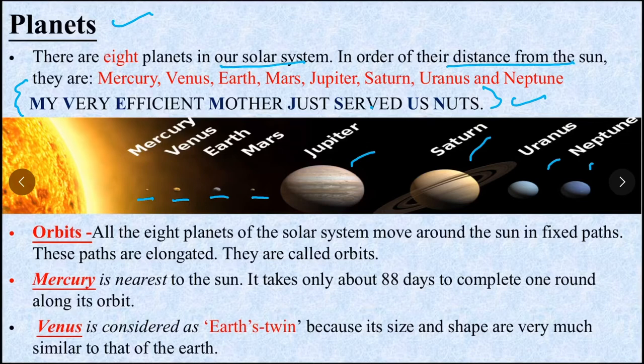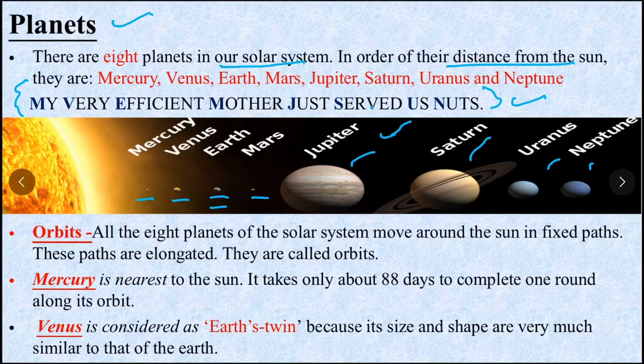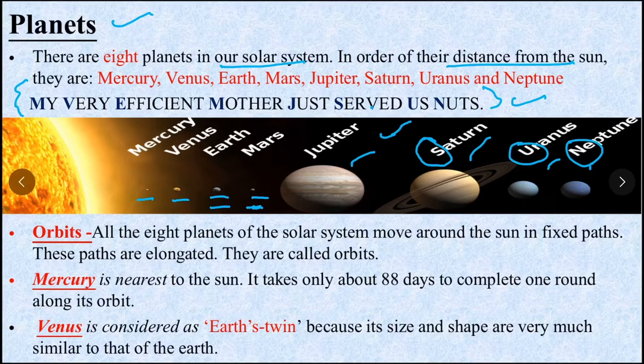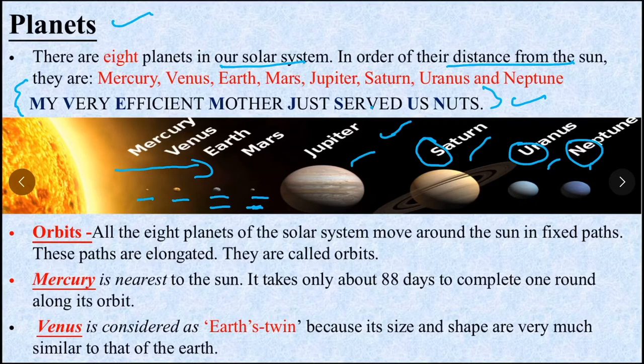You have to remember this - first Mercury, then Venus, third number Earth. We know that sometimes we see Mars, then Jupiter, then we can remember it from Sun. You have to remember that the distance is in this order.